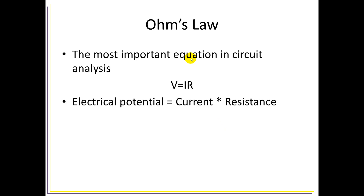This brings up Ohm's Law, which is the most fundamental equation used in circuit analysis. It tells us that the electrical potential dropped by an element, V, is equal to the current through that element multiplied by the resistance of that element. We're going to use that equation throughout this course, and if you take a circuit analysis class from an engineering program, you will see that equation used quite a bit.